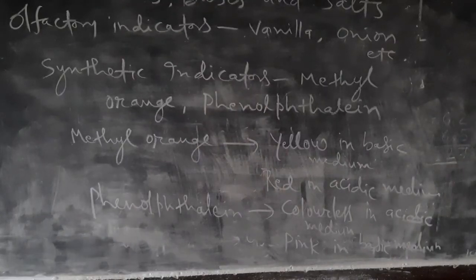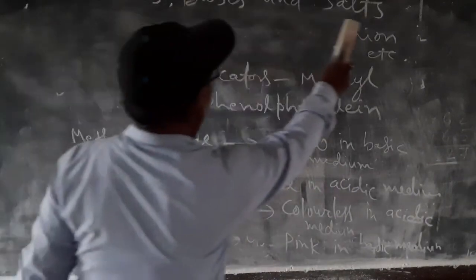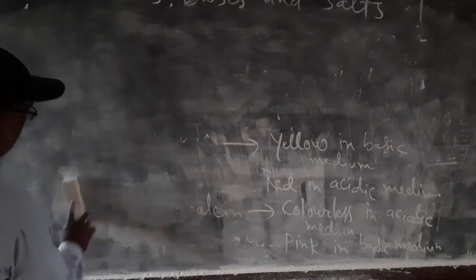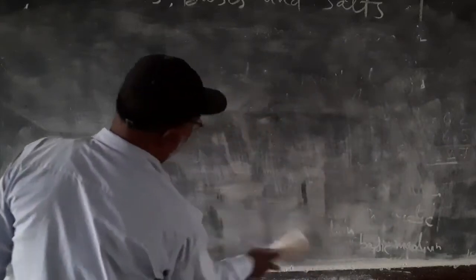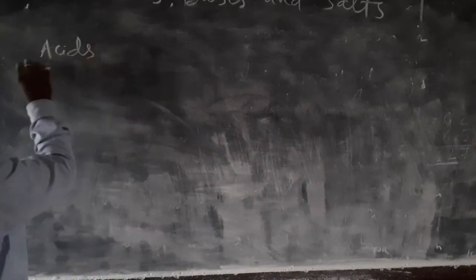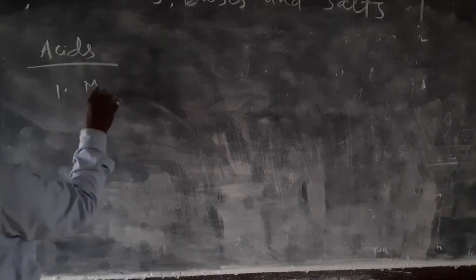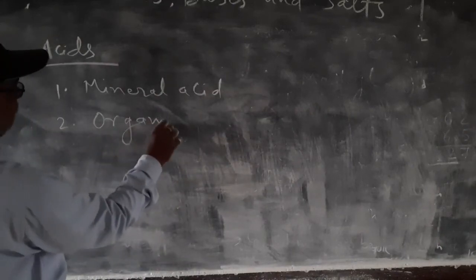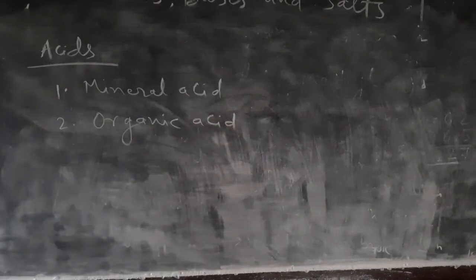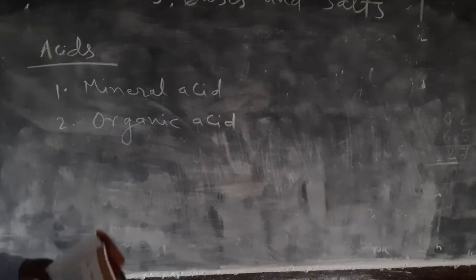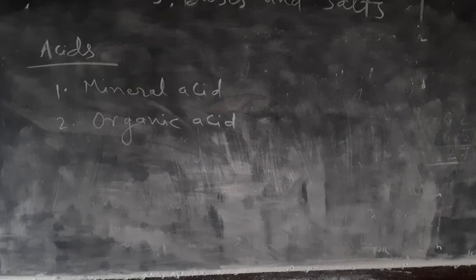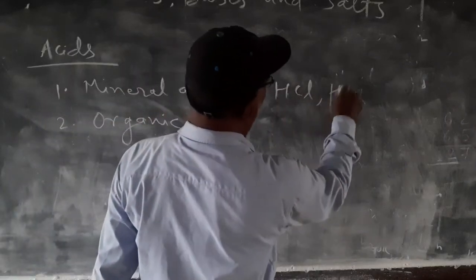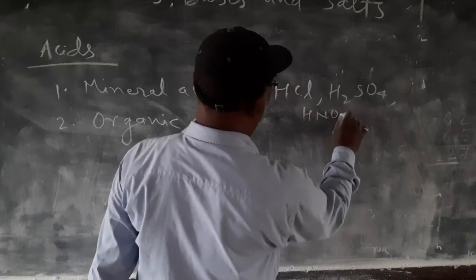There are two types of acids also. The first is known as mineral acid - acids which are not obtained directly from nature are known as mineral acids. The other type is organic acid. Organic acids are obtained from nature - from plants and animals. Mineral acids include HCl, H2SO4, and HNO3.